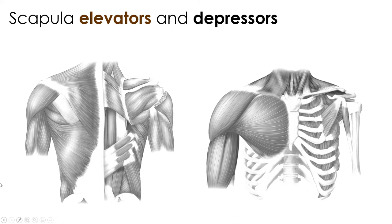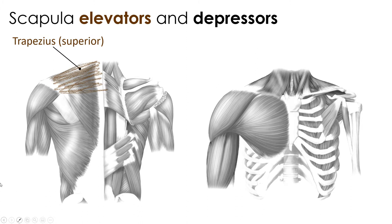Looking at section A of the activity on scapular muscles: the two muscles that elevate the scapula are the trapezius — specifically its superior fibers — and the appropriately named levator scapulae. Both have insertions on the scapula but their origins are superior to it. For depression, the only muscle you're responsible for is the subclavius — it's very small in the figures, but make sure you can identify it on charts and models.